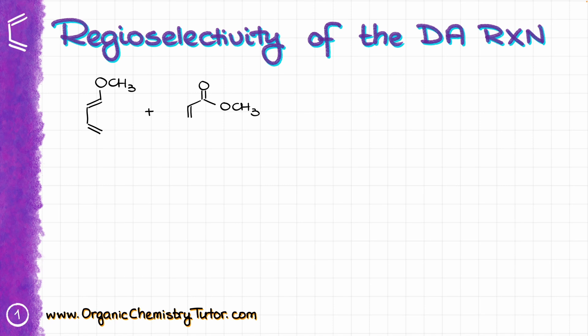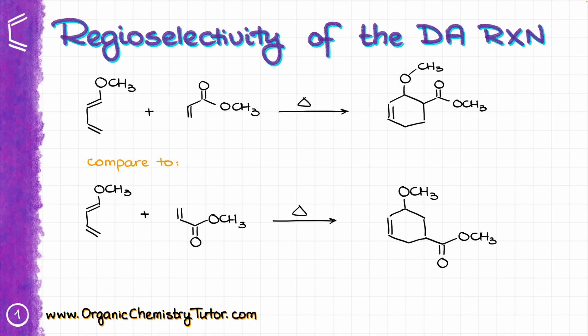Let's look at the following example. In this case, the molecules can react with each other in two different combinations, giving us two different constitutional isomers as our products. Let's say combination A is going to give us product A, and likewise combination B is going to give us product B. Now the question is: are both of these products going to form in equal amounts, or is one of them going to be the major product?